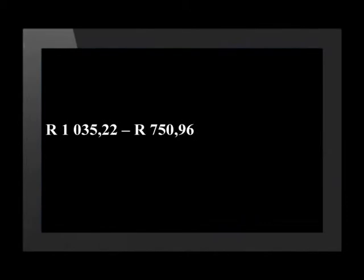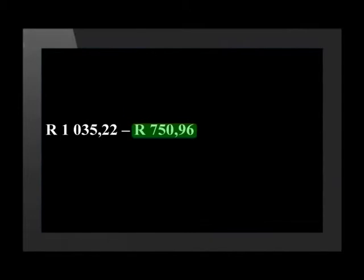Let's calculate the final amount due on the account. The payment date is the 26th of July 2012. The total amount due is 1,035 rand and 22 cents. The account holder has already paid 750 rand and 96 cents, meaning that their payment due is 284 rand 26 cents.